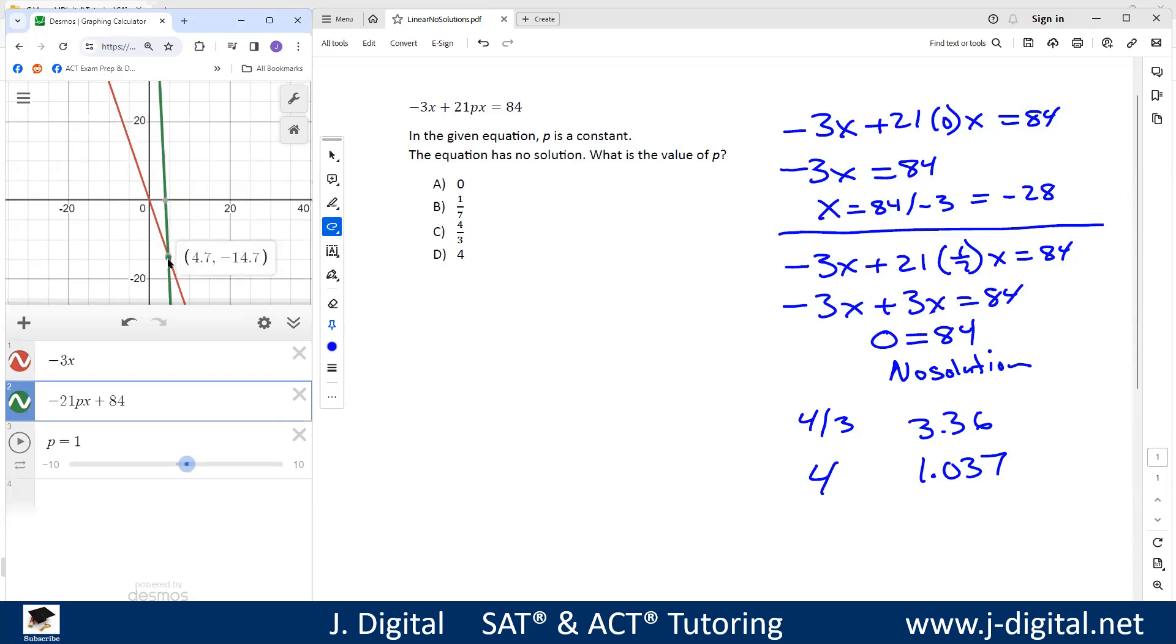Right now, they meet at this point. So in order to have no solution with two lines, the two lines have to have the same slope but different y-intercepts.